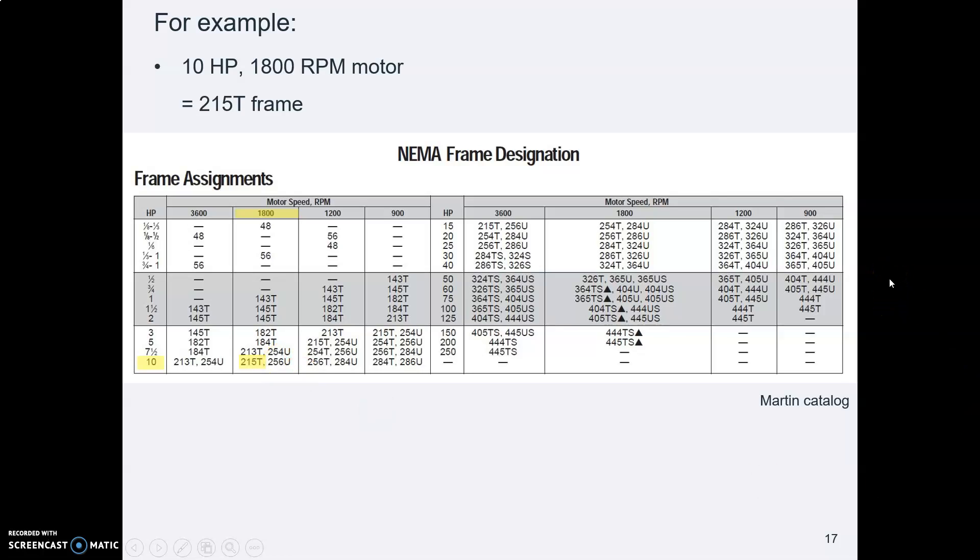I think they were used from 1952 to 1964 and beginning in 1964, NEMA started using T frames. But some charts give the old U frames also because there are a lot of plants that have really old motors in them. We're using T, though, because that's the modern size. So a 10 horsepower, 1800 RPM has a 215T frame size.